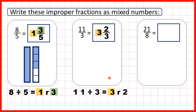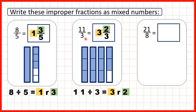So our mixed number is 3 and 2 thirds — the whole number comes from the division and the remainder is the numerator. Here we have 11 thirds because each fraction bar is split into 3 pieces and we have 11 pieces altogether. When we change it to a mixed number, we make 3 wholes, giving us 3 wholes and 2 thirds.